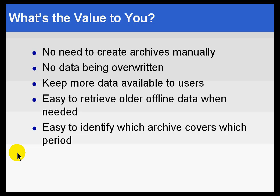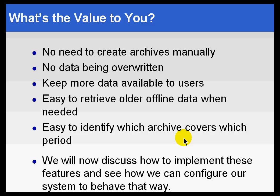It's easy to identify which archive covers which period. If you're simply looking at the data — much less trying to retrieve it from being offline somewhere — it's a lot easier to see which archives contain certain dates. The naming convention makes it easier to retrieve offline data because it tells you what's there, and that makes working with it on a day-to-day basis easier. With these things in mind, we'll proceed to discuss how to implement these features and configure a system to behave using those ideals.